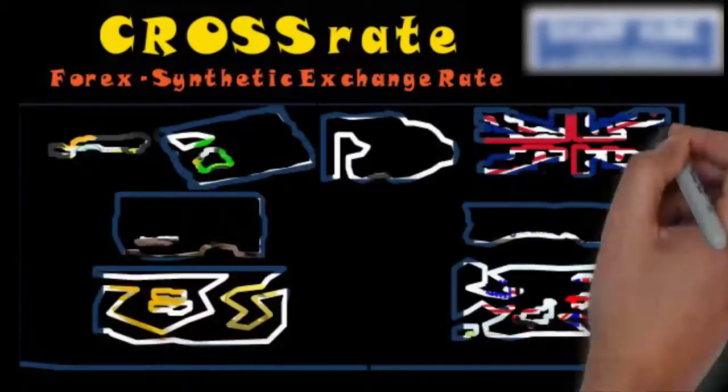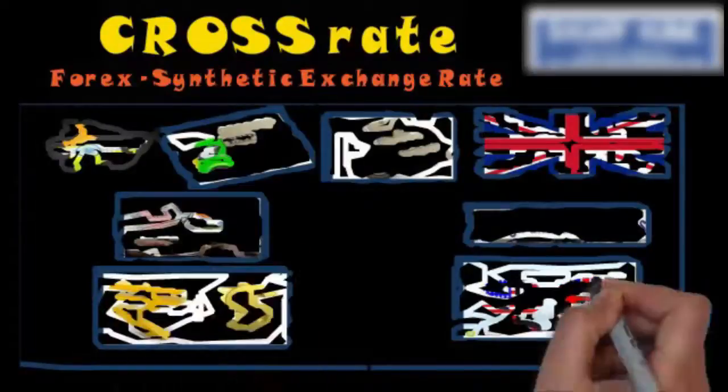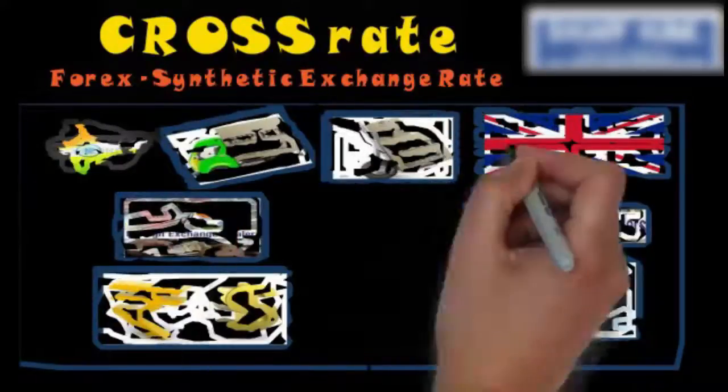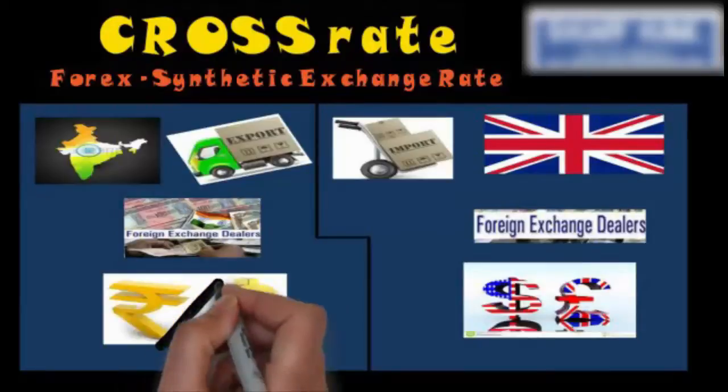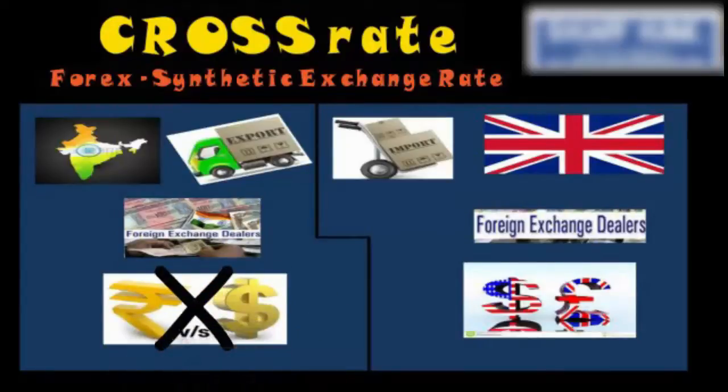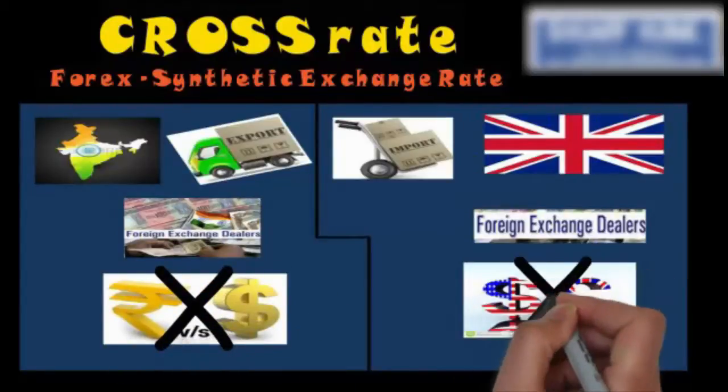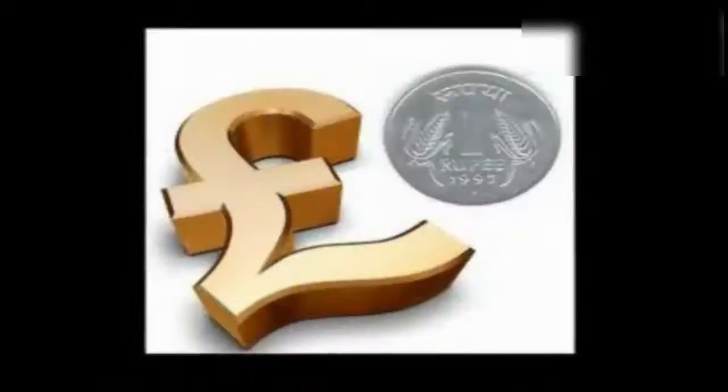Now in this given picture, you can look that an Indian exporter has exported goods to UK, but the rate available to him is in terms of Rupee per dollar. And in UK, the rate available is dollar per pound. We don't need this rate. We need a direct rate between India and UK. We need a rate in terms of Pound and Rupee.